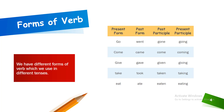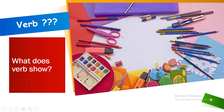Go is the first form of verb. Its past form or second form is Went. Its third form is Gone. Its -ing form is Going. The second verb is Come — its second form is Came, third form is Come, -ing form is Coming. Give — Gave — Given — Giving. Take — Took — Taken — Taking. Eat — Ate — Eaten — Eating. These are the forms of verb which we use in different tenses.